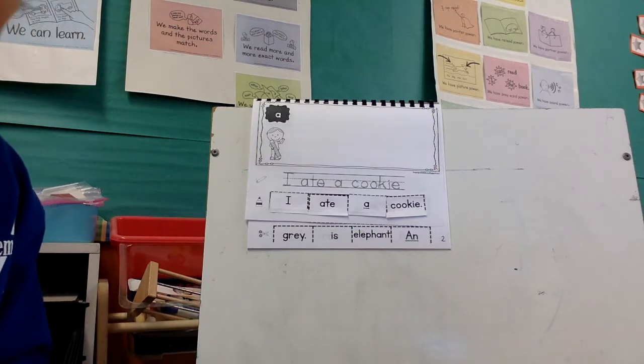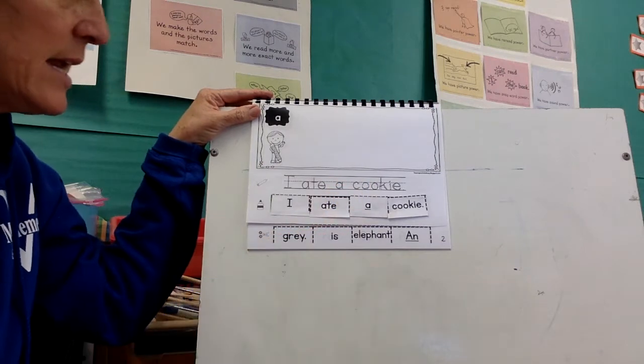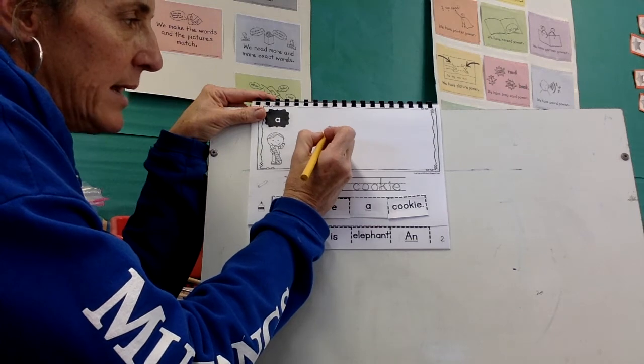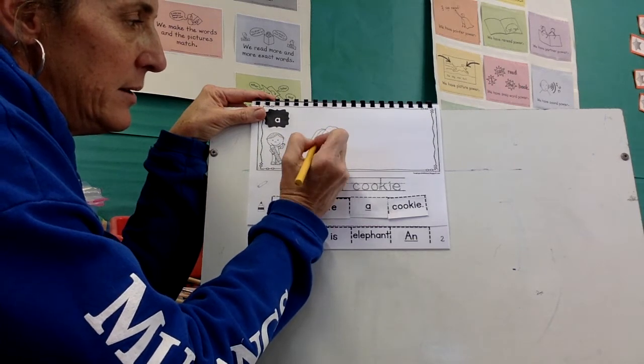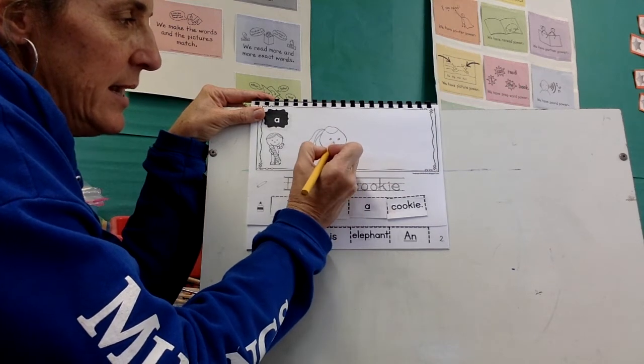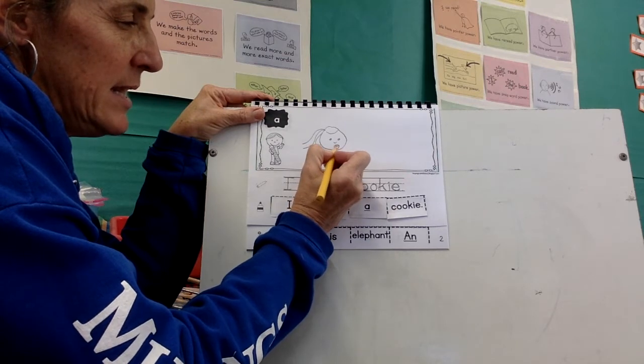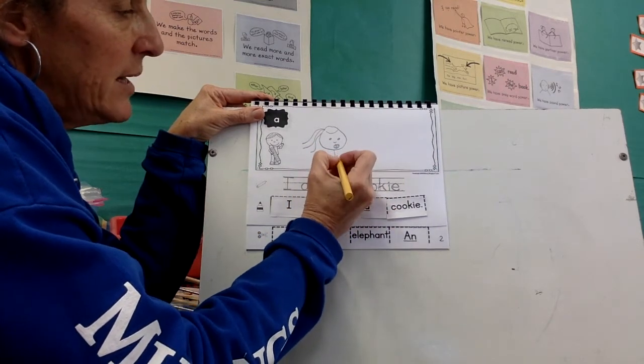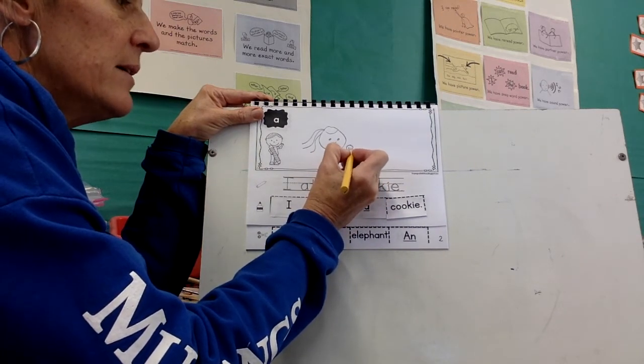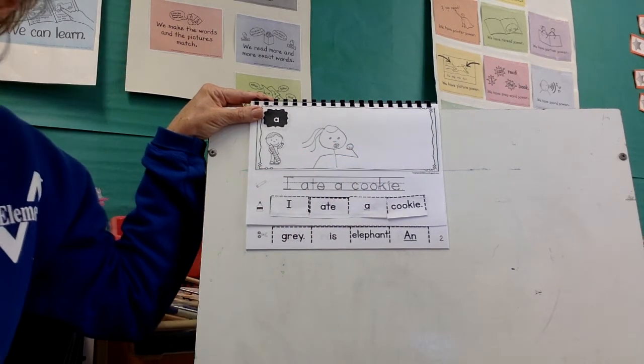Here's the last thing you'll do. You'll draw a picture of I ate a cookie. So maybe I'll draw myself. Here I am. I have my hair pulled back in a ponytail. And if I'm eating a cookie, let's see, here are my eyes. And here's my nose. And then if I'm eating a cookie, I'm going to make my mouth big. There's my teeth. And then here's my body. And here's my hand. And I'm holding a cookie. I ate a cookie.